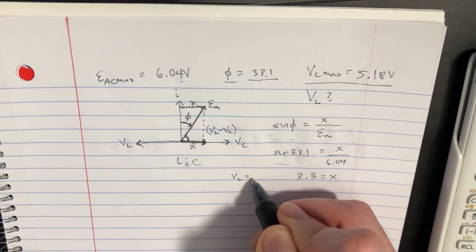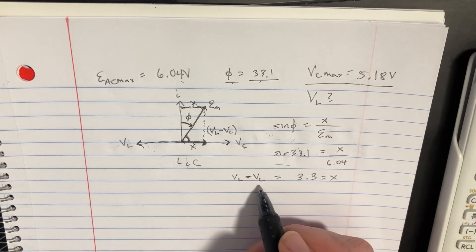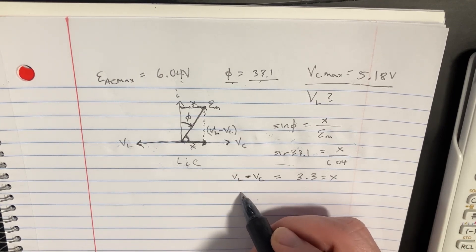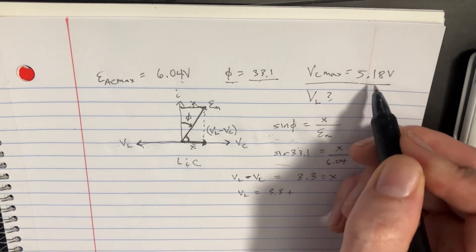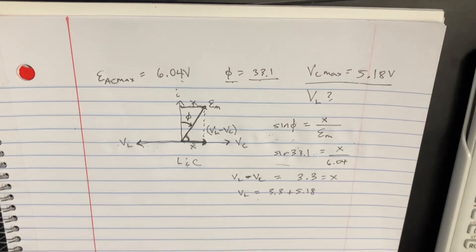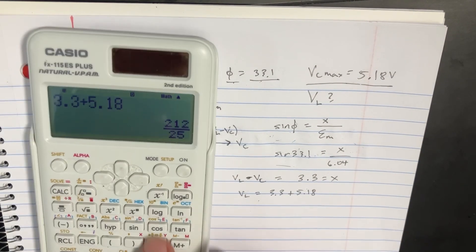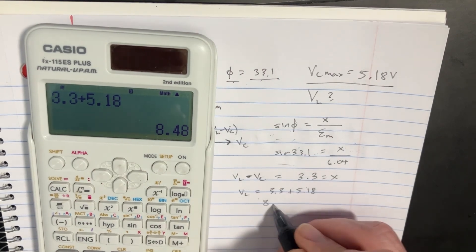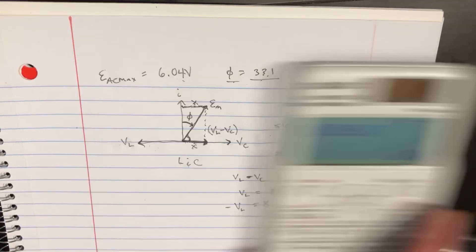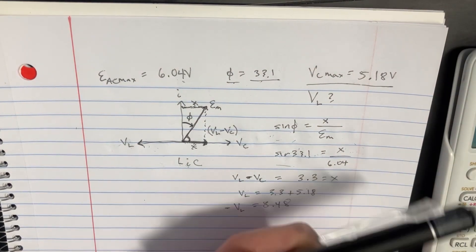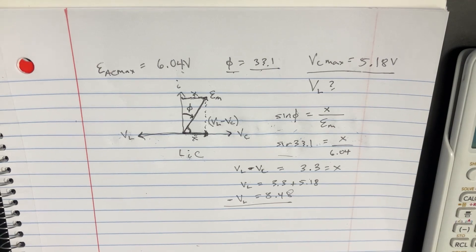What we could do is set this VL minus VC equals 3.3. And so with that being said, we'll say VL equals 3.3 plus that, which is going to be 5.18. And we add that up together. 3.3 plus 5.18. It's 8.48. Remember, VL is actually negative because it's just on that side again. So yeah, that's the magnitude. But we have to make it negative. And there we go.